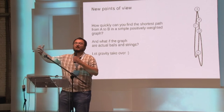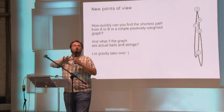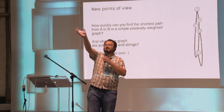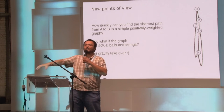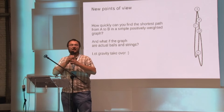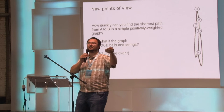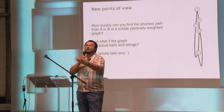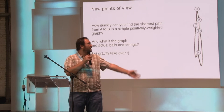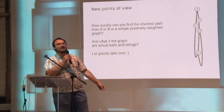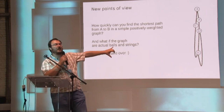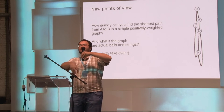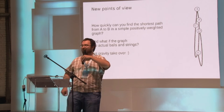Also, imagine you have already computed the shortest paths from A to everywhere else, and now you add a new edge. What changes? What do I need to recompute? If you visualize it like the balls, you add a new string and you can see what happens — it lifts some balls higher. Now, let's get back to our original question: we are looking for the shortest path from A to B, but what if the graph is a map of Europe?